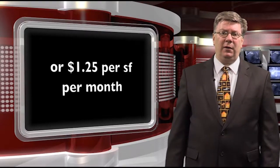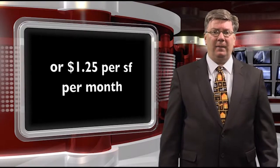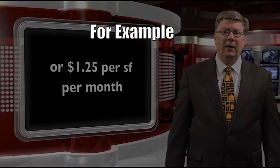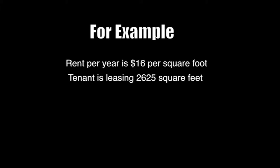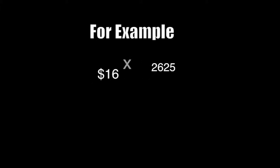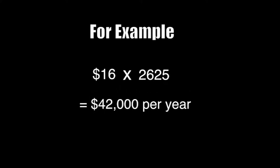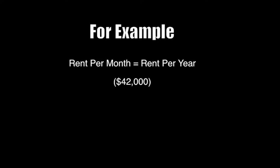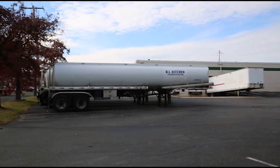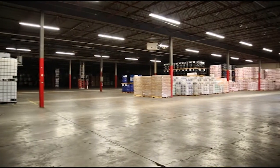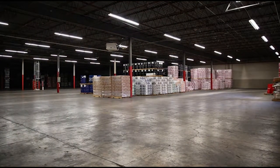To compute monthly rent, multiply the rate by the square footage and divide by 12. For example, at $16 per square foot with 2,625 square feet: $16 × 2,625 = $42,000 per year ÷ 12 = $3,500 per month. For tenants leasing multi-use properties — part office, part warehouse — the rate is generally blended between the two uses rather than quoting separate rates for each.